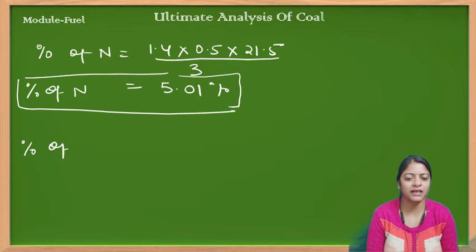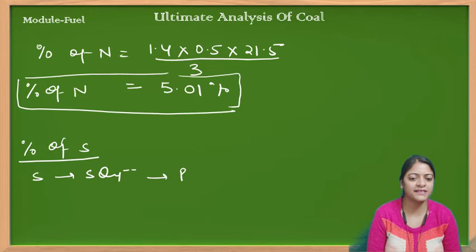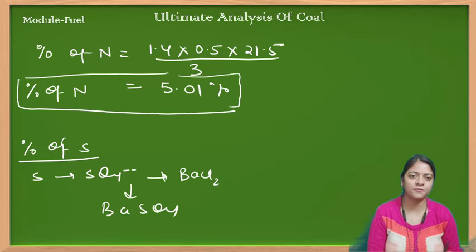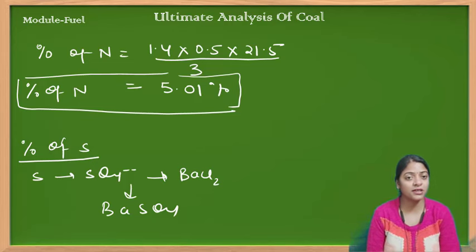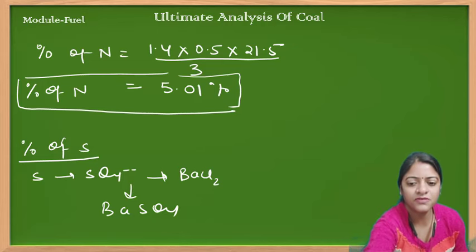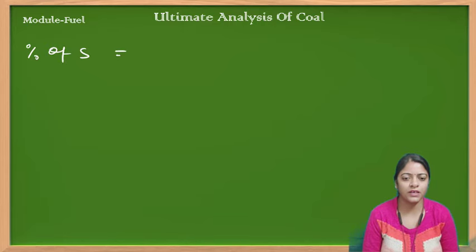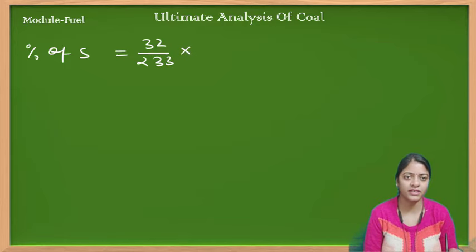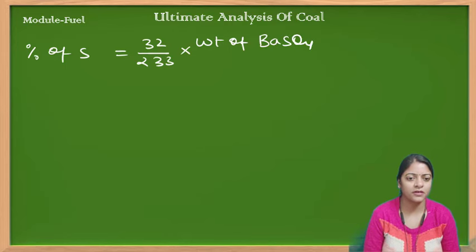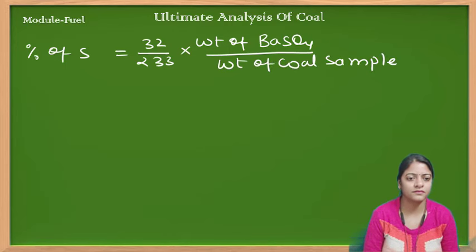Percentage of sulfur निकालने के लिए — sulfur को sulfate में convert होता है, और इसको barium chloride के साथ react कराते हैं, जिससे यह barium sulfate में convert हो जाता है। जो barium sulfate मिला उसको precipitate filter कर लो, dry कर लो, और उसका weight करो। Percentage of sulfur = (32/233) × (weight of barium sulfate precipitate / weight of coal sample) × 100, जहाँ 233 barium sulfate का molecular weight है और 32 sulfur का atomic weight है।